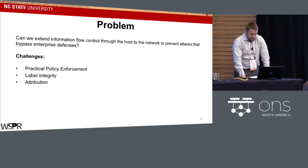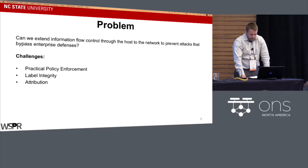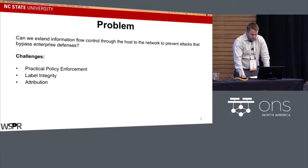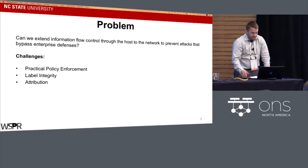If a host compresses, encrypts, or modifies data in some way, the label does not remain. And finally, attribution — the key to preventing any future attack is to understand the what, where, why, and how a loss of confidentiality occurred. We'd like the ability to forensically examine all the processes, connections, and logs to identify what happened.